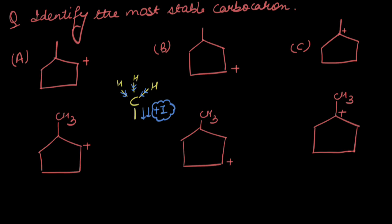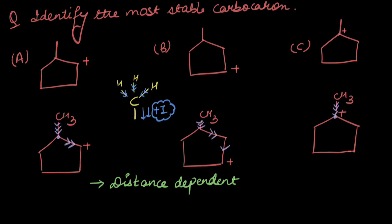A methyl group tends to donate electron density through sigma bonds — it is an electron donating group. Inductive effect is a distance dependent effect: the farther away the donating group is, the lesser its effect. The farther the methyl group is from the carbocation, the less help it can provide. It is closest in the third case, and therefore provides maximum support there. So the most stable carbocation is the third one.